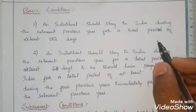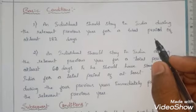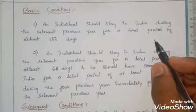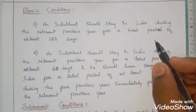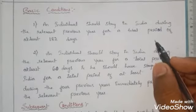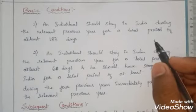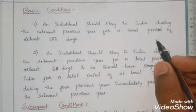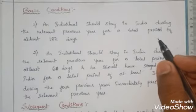First, let us understand what is a previous year. The previous year is the year before the assessment year. For example, if 2019-20 is the assessment year, then the previous year will be 2018-19. So the condition is that an assessee must stay in India for at least 182 days in the previous year.